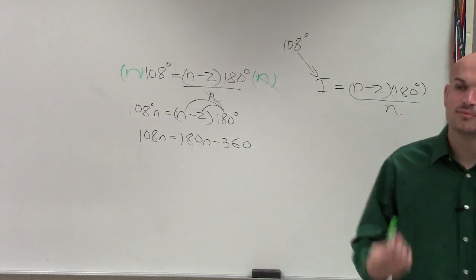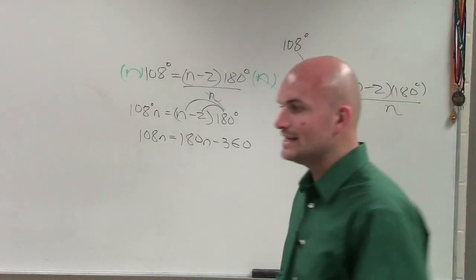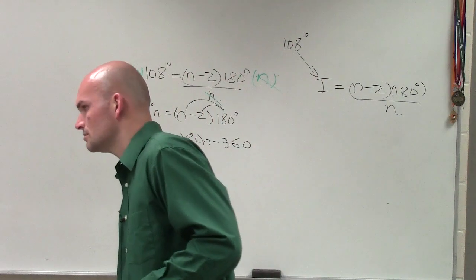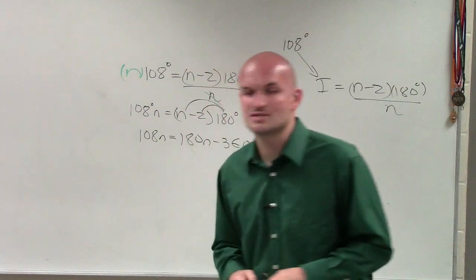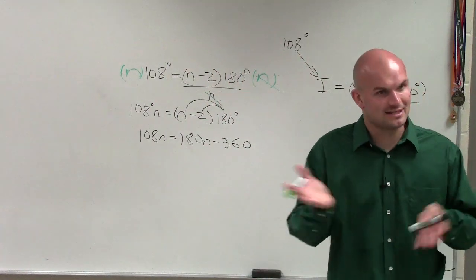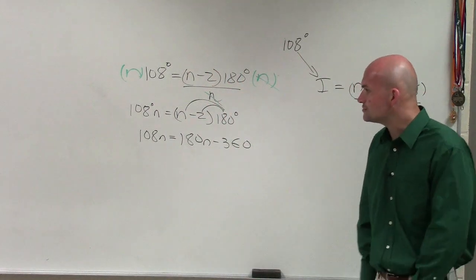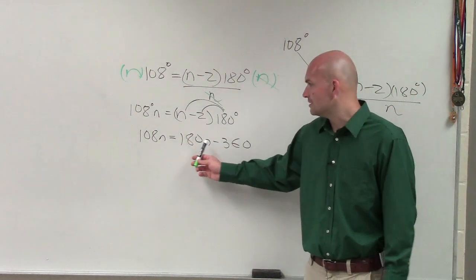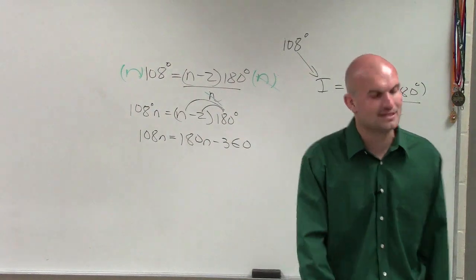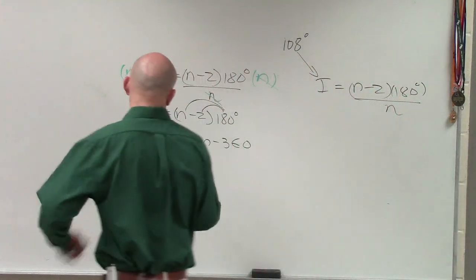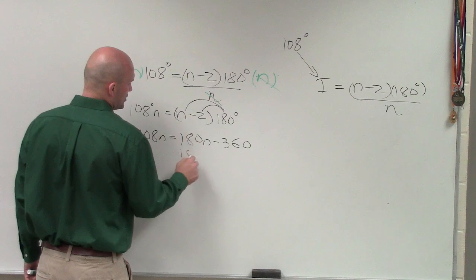And now, we have a variable on both sides. So to get the variable off both sides, we have to add or subtract to get them on the same side. Now, usually what I like to do, ladies and gentlemen, is we can just subtract this over to there just to get them on to the same side. And that's what I'll do. I'll subtract 180n.